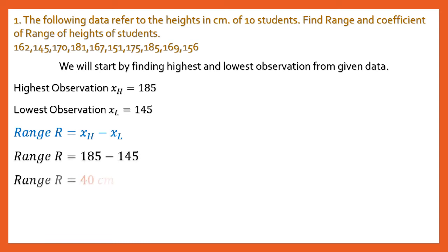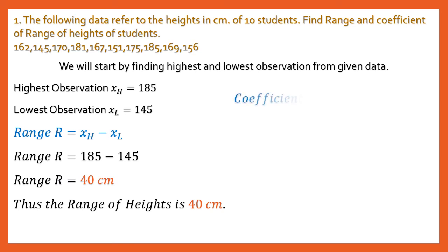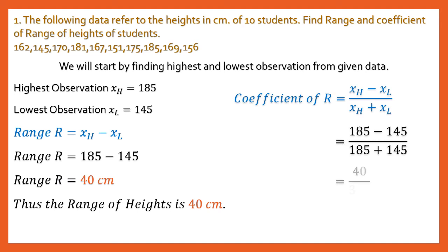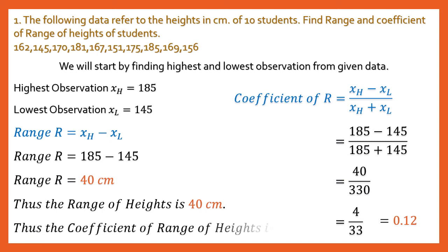Range = XH − XL = 185 − 145 = 40 centimeters. So the range of heights is 40 cm. For the coefficient of range: (XH − XL) / (XH + XL) = 40 / 330 = 4/33 = 0.12. There is no unit. Statement: The coefficient of range of heights is 0.12.